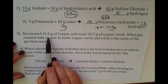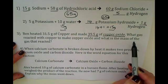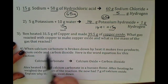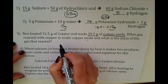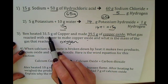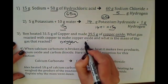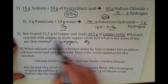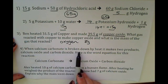For question 3: Ben heated 31.5 grams of copper and made 39.5 grams of copper oxide. What gas reacted with the copper, and what is its mass? Remembering that when metals react with oxygen they make oxides, the gas is oxygen. Since he started with 31.5 grams of copper and ended with 39.5 grams of copper oxide, it must have reacted with 8 grams of oxygen, because 31.5 plus 8 equals 39.5.